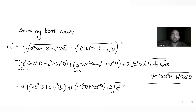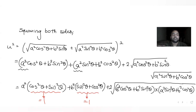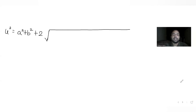Plus two times root of A into root of B — I can just write that as root of A into B. So you get this entire expression. Now, from the identity sin square theta plus cos square theta equals one, both groupings reduce to one. So you get a square into one as a square and b square into one as b square. So u square basically equals a square plus b square plus two times root of the product term.